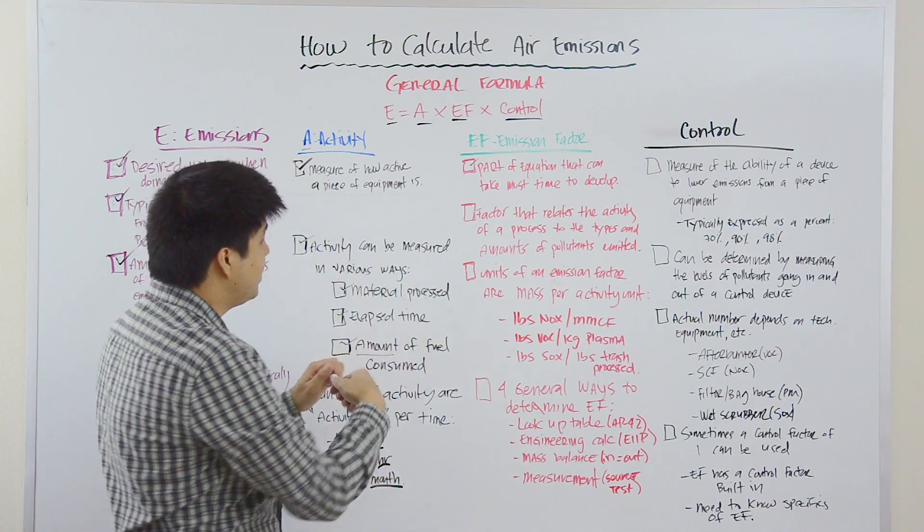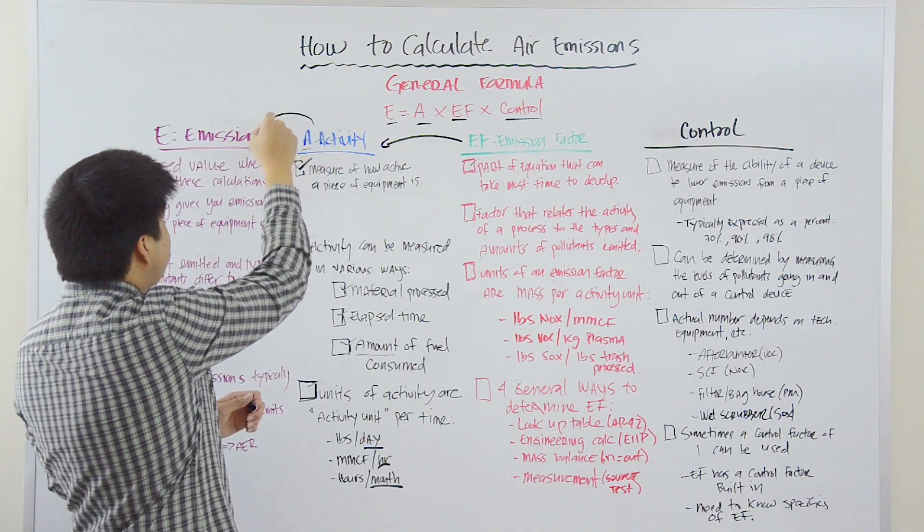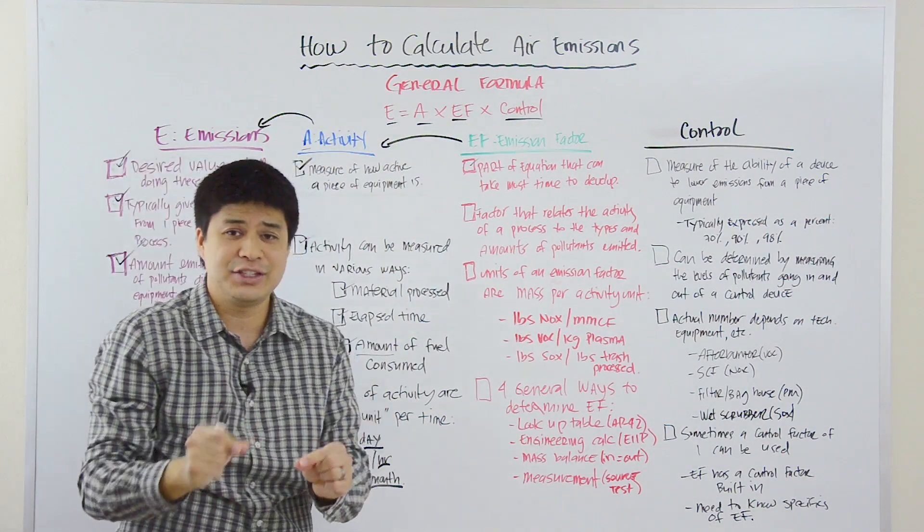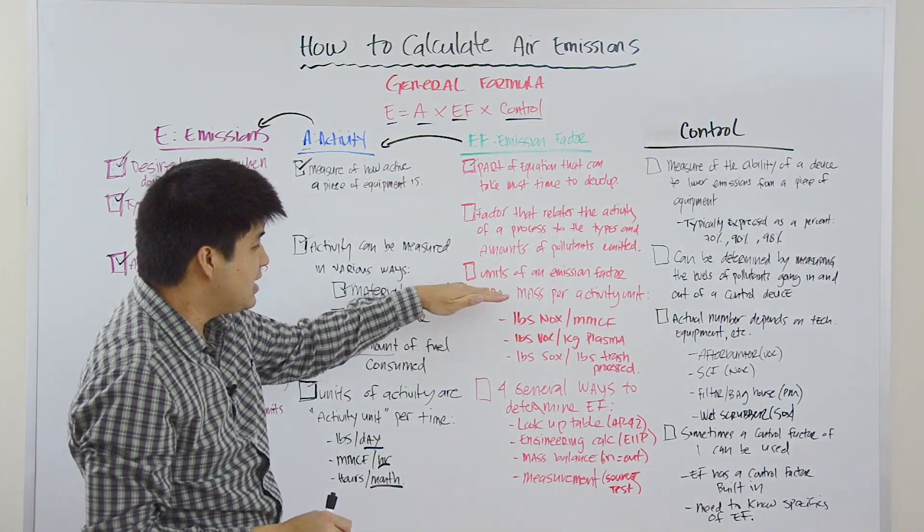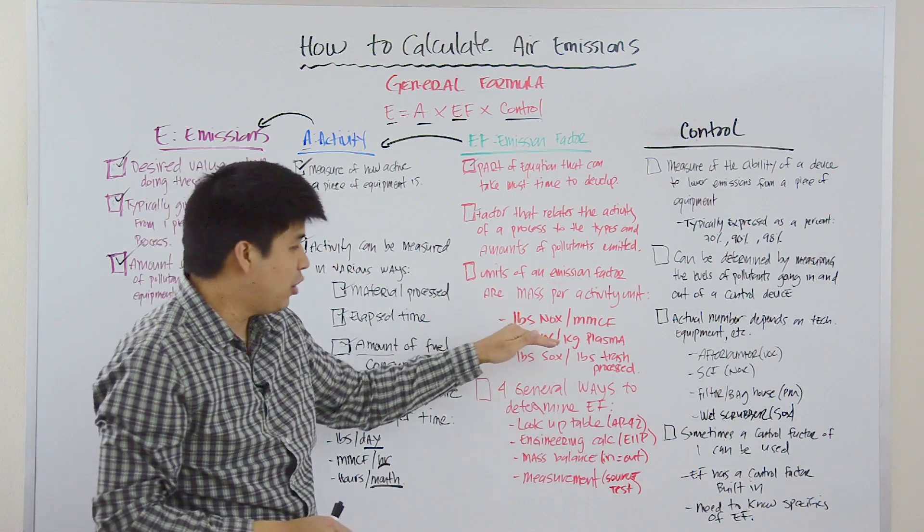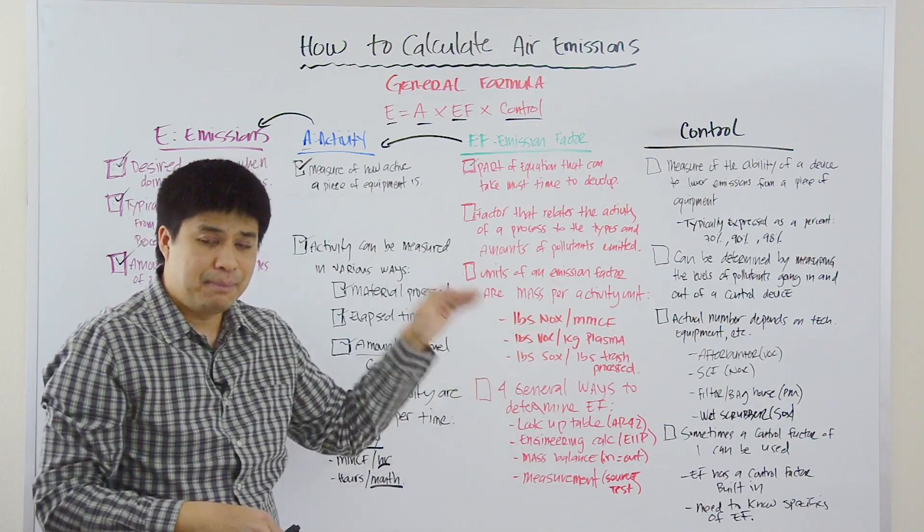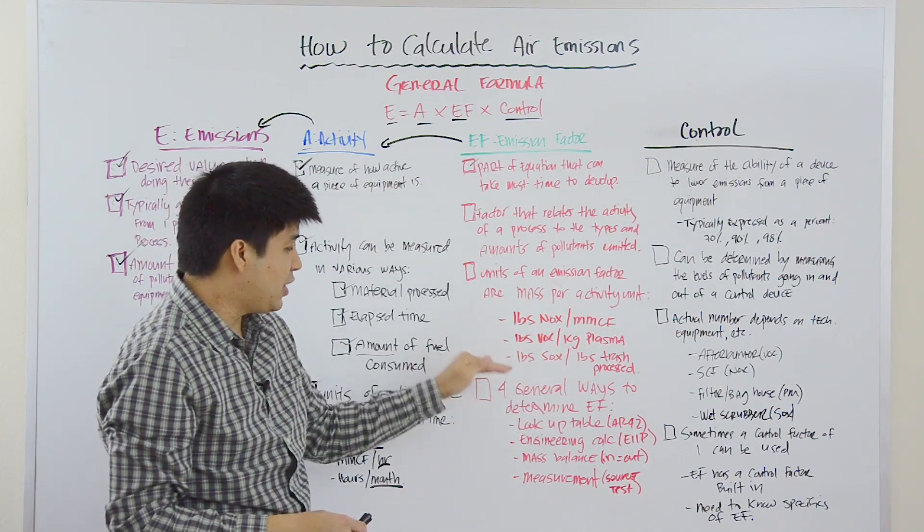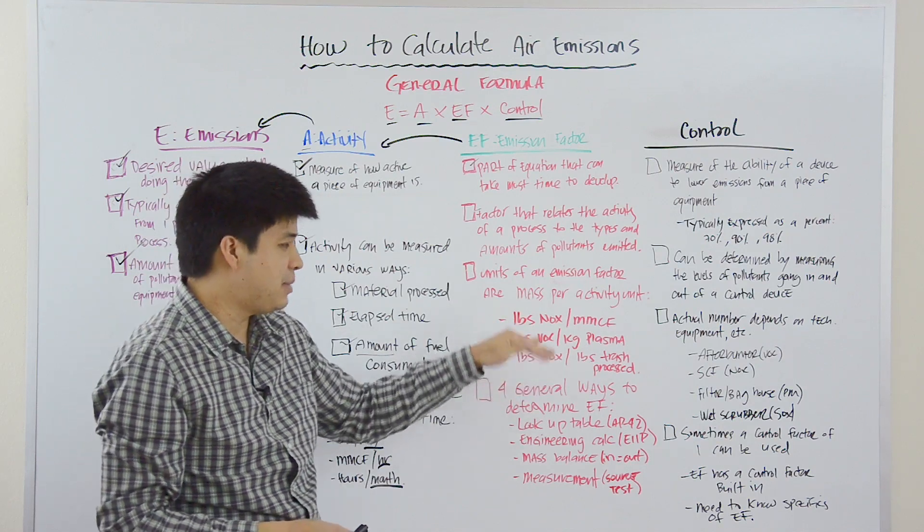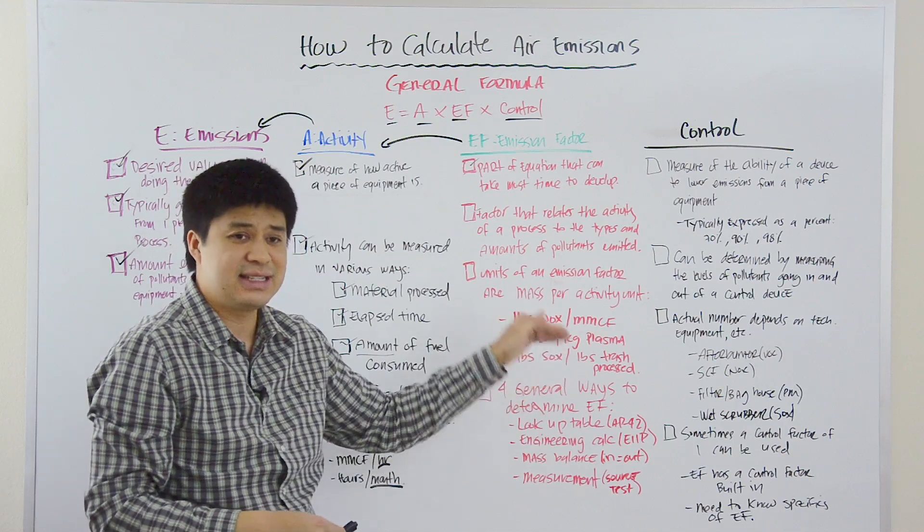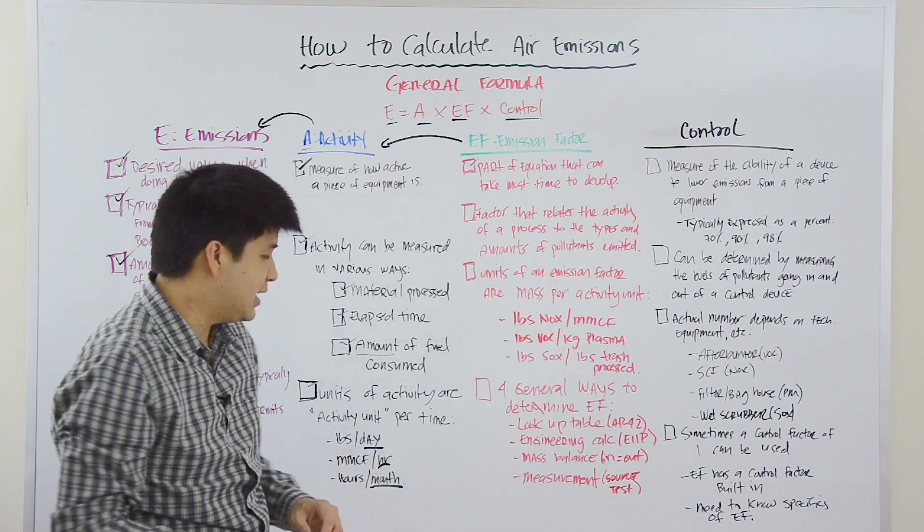And so, you have to be absolutely sure that the units cancel out. And so, what we typically see is that the units of an emission factor can be pounds of NOx per million cubic feet of natural gas combusted. That million cubic feet of natural gas combusted is the activity unit. We can also have an emission factor that's pounds VOC per kilogram of plasma processed. Again, that kilogram of plasma processed is the activity unit, or pounds of SOx per pound of trash processed. You get the point.